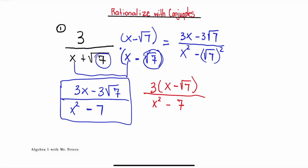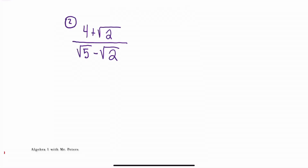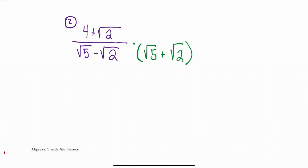Now we're going to look at our second example. The second type of problem you'll see is when we have more than one radical — typically they'll put two radicals into the denominator. But the process stays the same: we're going to rationalize with the conjugate. So radical 5 and radical 2 stay the same, but instead of a subtraction sign it's going to have an addition sign, and we apply this same step to the numerator.